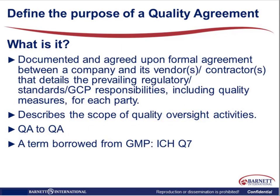So what is it? It's a formal agreement — documented and agreed upon — between your company and your vendors or contractors in the clinical space. And it details the prevailing — I use that word intentionally, 'prevailing,' because they do change — regulatory standards, the GCP responsibilities. And if you're not aware, ICH E6 R3 is currently under discussion. It includes quality measures for each party: the sponsor and the contractor.